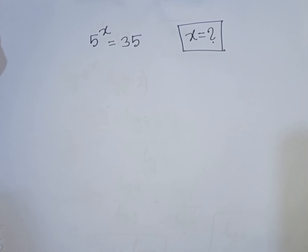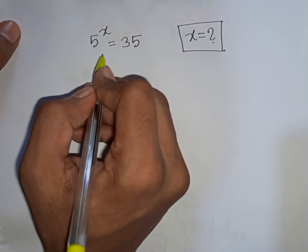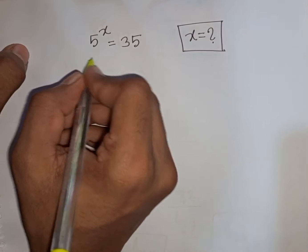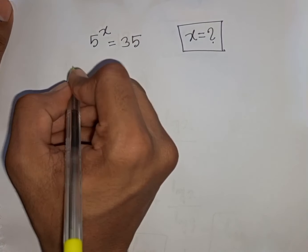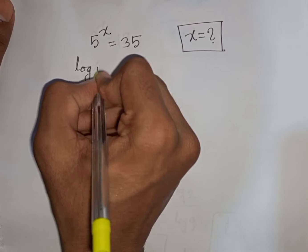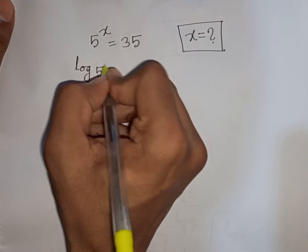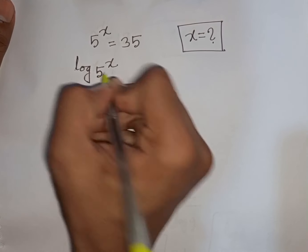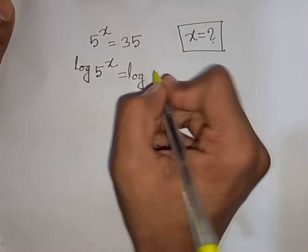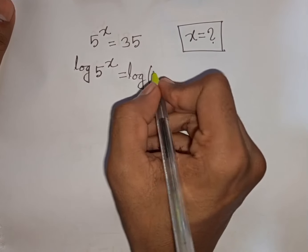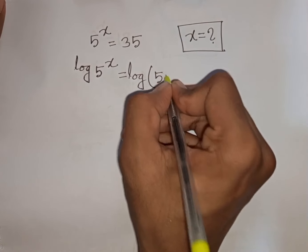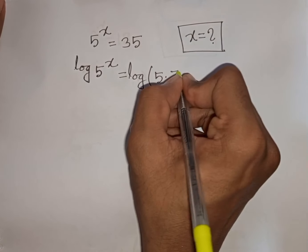How to solve 5 power x is equal to 35 — find the value of x. At first, we take log on both sides. So we can write log of 5 power x is equal to log of 35, which can be written as log of 5 times 7.